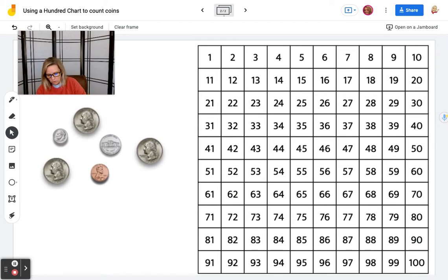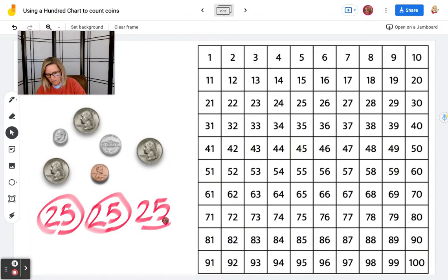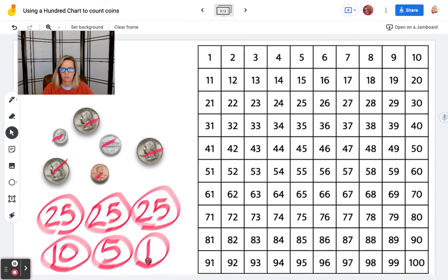I'm going to write my coins in order from largest to smallest. I have three quarters, so I'm going to write those out: 25, 25, 25. Then I have one dime, 10. Then I have one nickel, 5. And I have one penny.